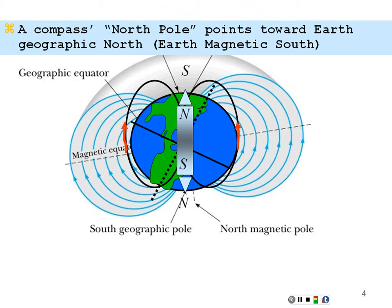At least for now — every couple million years, the poles of the Earth reverse polarity. No one really knows why. The source of the Earth's magnetism is swirling molten material in the Earth's outer core, which includes magnetic and metallic material swirling around creating a dynamo effect, producing this magnetic field.